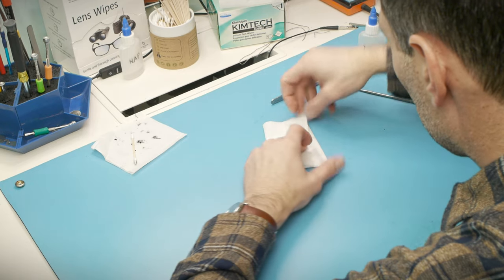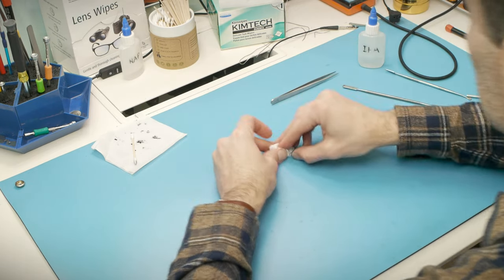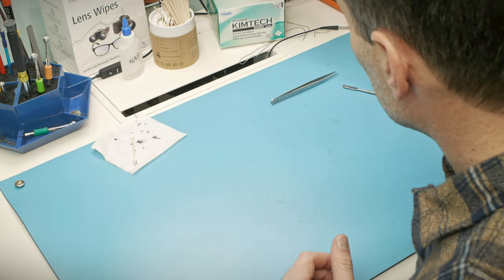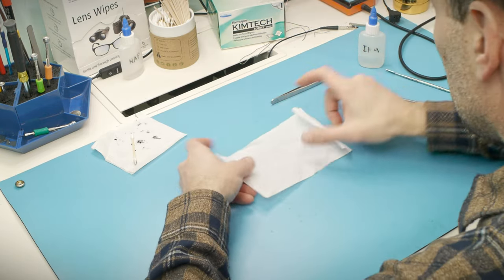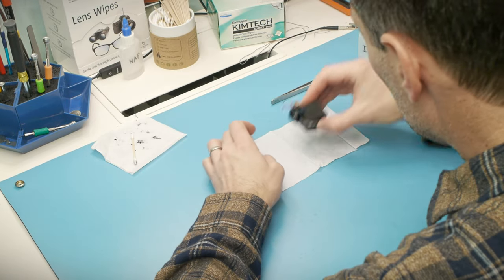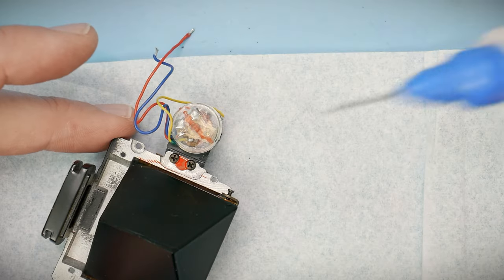All right, onto the focusing screen. I should mention that this cleaning can be done without completely removing the mirror box. If you just take the top cover off the camera and then remove the retainer springs on the pentaprism, this whole module can be removed. It's not necessary to completely disassemble the camera to get to this thing.